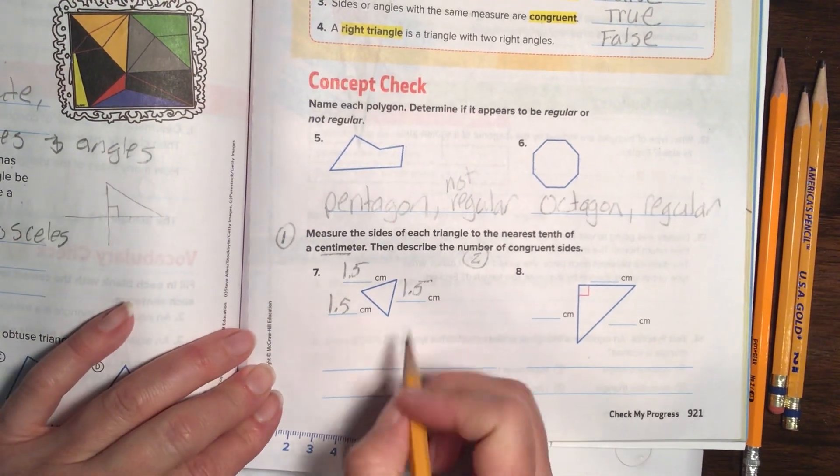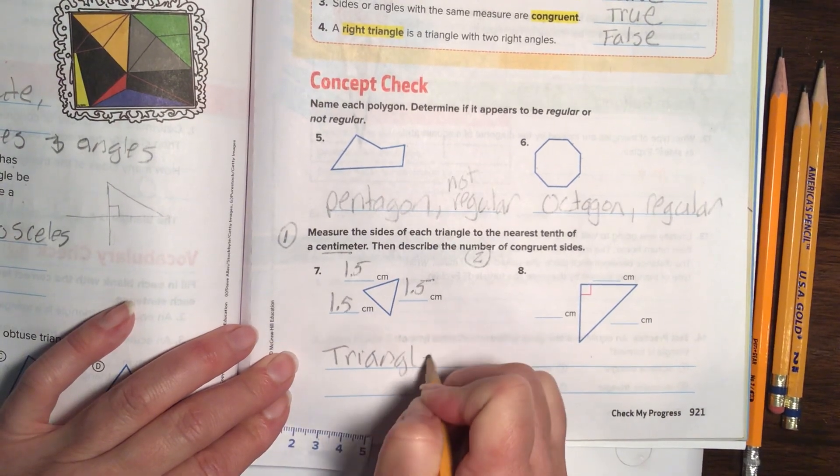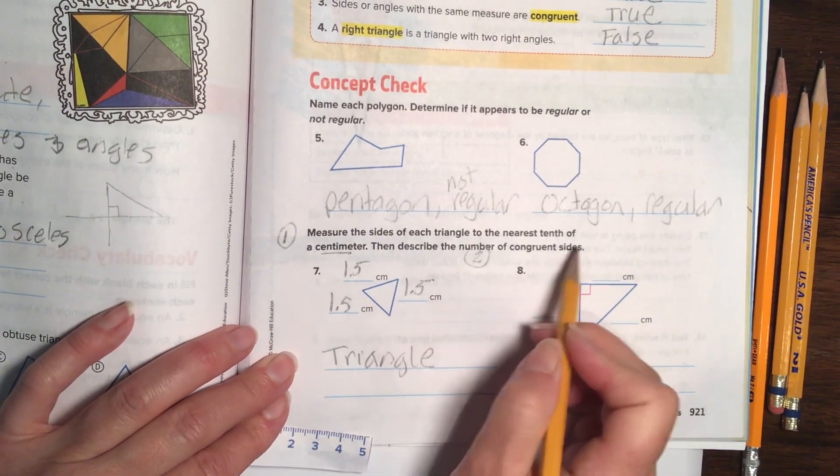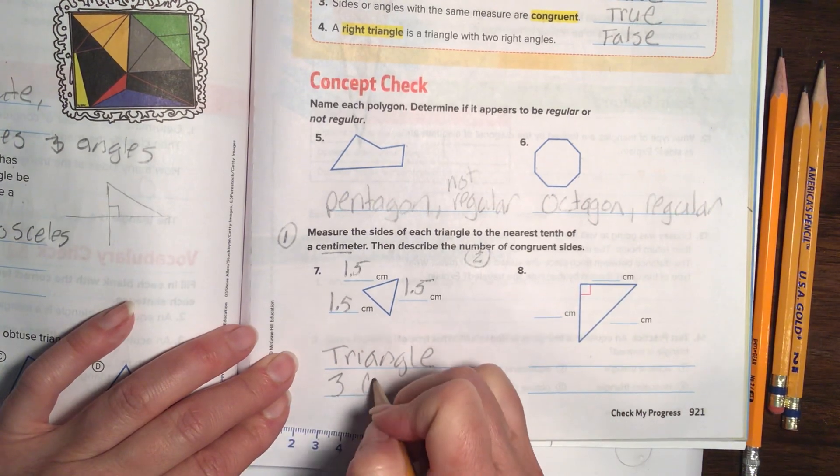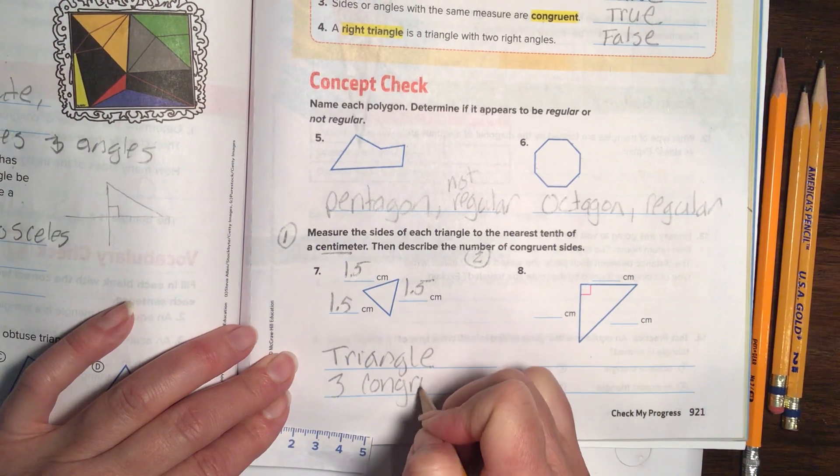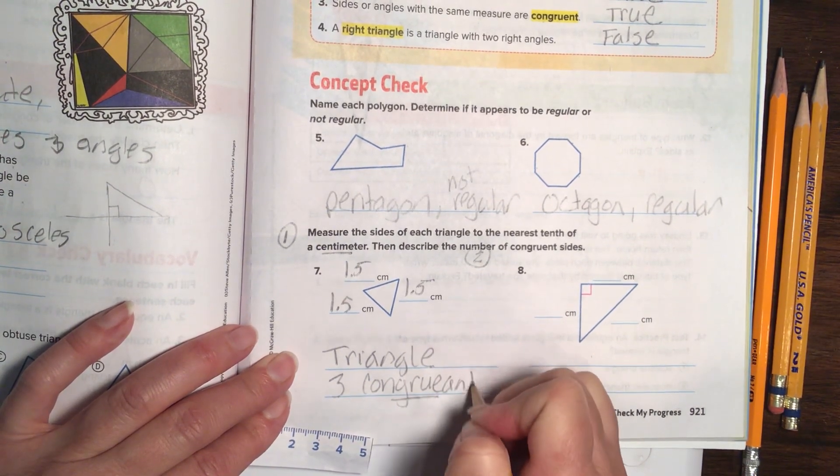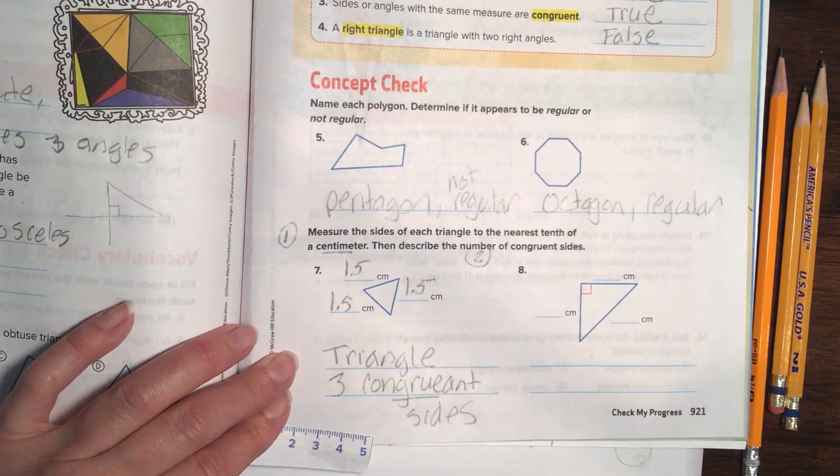Alright, they are all the same. Or in other words, we can say they are all congruent. And we're going to say that this cute little thing is the shape of a triangle. And now it wants us to describe the number of congruent sides. We're going to say, well, it has three congruent. Remember to spell our fabulous friend from the Minions, grew, grew, three congruent sides. Ta-da!